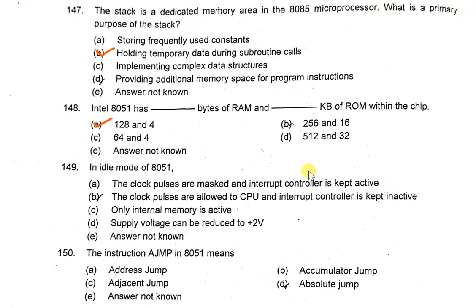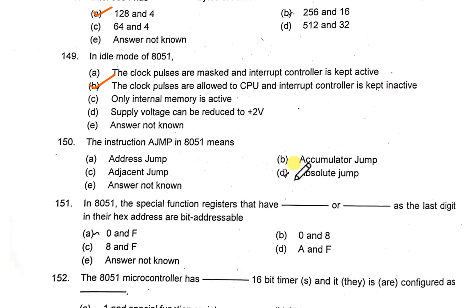In idle mode of the 8051, clock pulses are halted to the CPU but the interrupt controller is kept active — option B is correct. The instruction AJMP in 8051 means absolute jump. Remaining questions and answers will be covered in the next video.